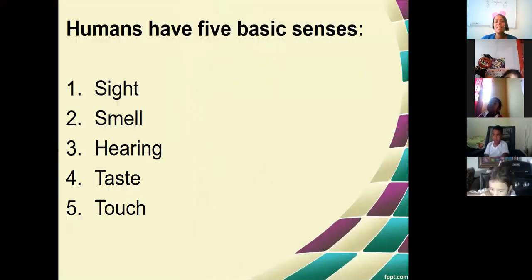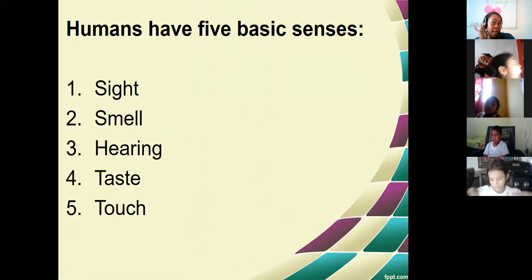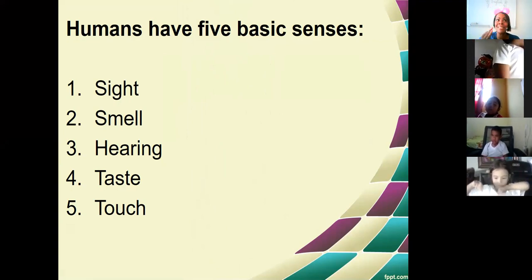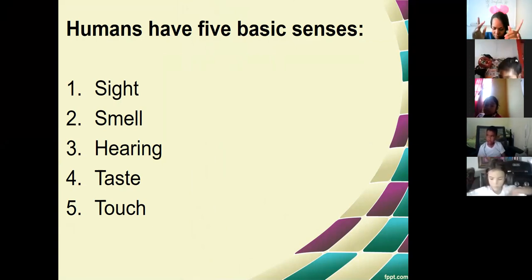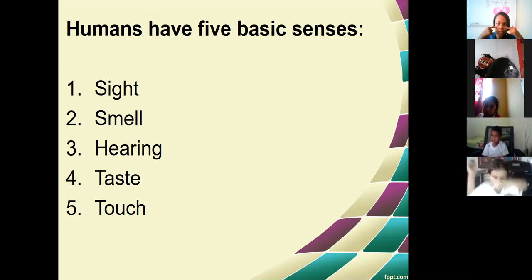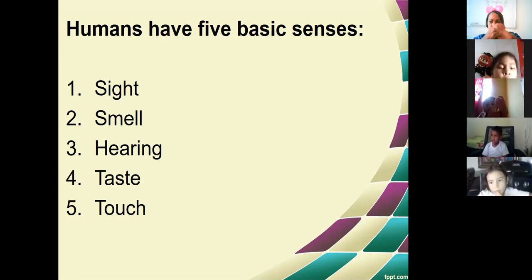The five senses are: humans have five basic senses. Sight is the sense of the view. Smell, the sense of smell. Hearing, the sense of the auditory. And taste, the sense of gusto. And touch, the sense of tact. Sight, smell, hearing, taste, and touch.